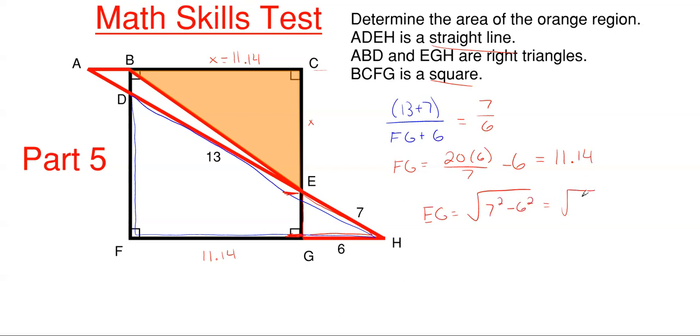So EG is just going to be the square root of 7 squared minus 6 squared, which gives me the square root of 13. So my dimension from C to E will just be my 11.14 subtracting off square root of 13, which you can always throw that in the decimal form if you need to because all our answers here we have a little bit of rounding differences.